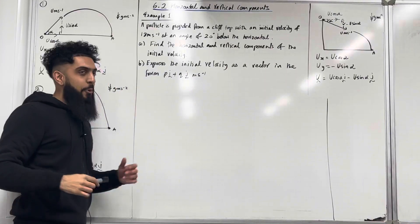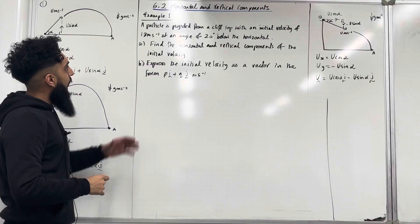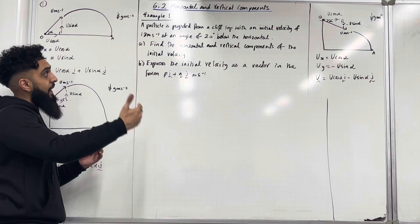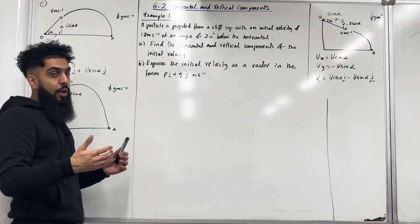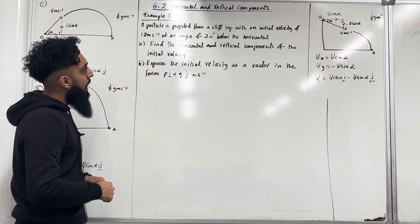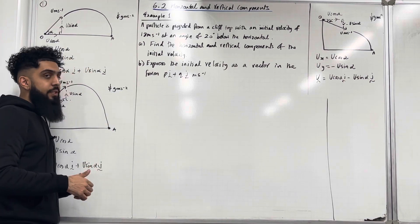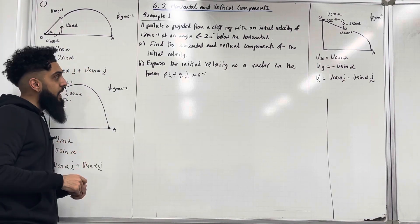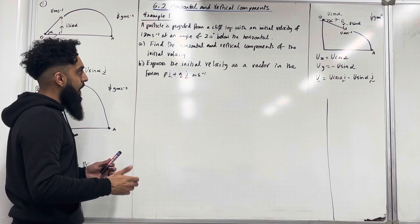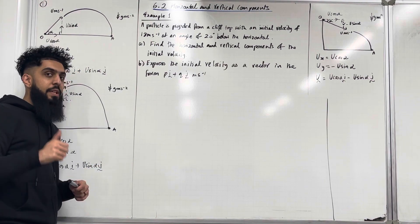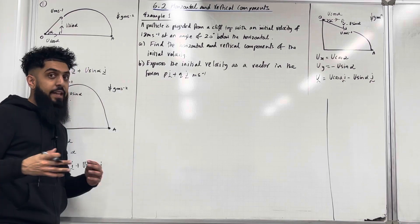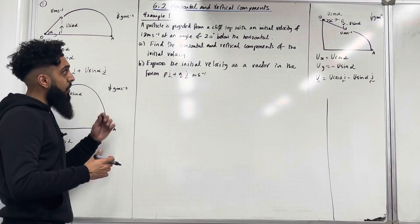Let's have a look at example 1. A particle is projected from a cliff top with an initial velocity of 18 meters per second at an angle of 20 degrees below the horizontal. Part A: find the horizontal and vertical components of the initial velocity. Part B: express the initial velocity as a vector in the form pi plus qj meters per second. I'm going to draw a diagram to model this scenario.